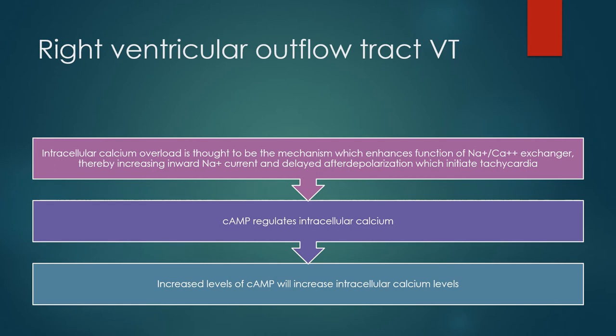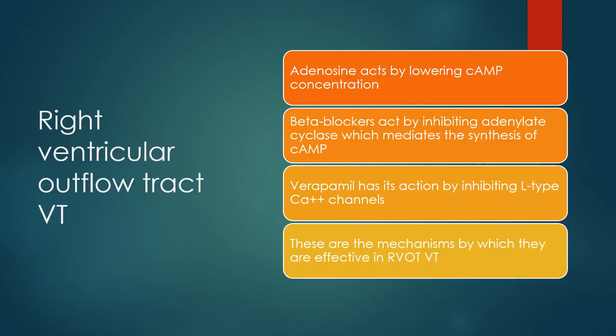Intracellular calcium overload is thought to be the mechanism, which enhances function of the sodium-calcium exchanger, thereby increasing inward sodium current and delayed afterdepolarizations which initiate tachycardia. Cyclic AMP regulates intracellular calcium; increased levels of cyclic AMP will increase intracellular calcium levels. Adenosine acts by lowering cyclic AMP concentration. Beta blockers act by inhibiting adenylate cyclase, which mediates the synthesis of cyclic AMP. Verapamil acts by inhibiting L-type calcium channels. These are the mechanisms by which these drugs are effective in RVOT VT.